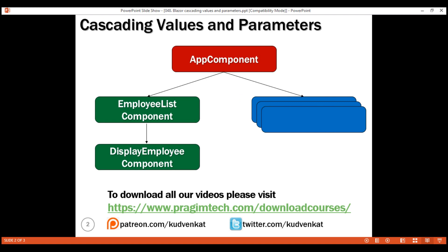However, when there are several component layers in the component hierarchy, it's tedious to pass data from an ancestor component to a descendant component using component parameters. This is when we use cascading values and parameters — they provide a convenient way for an ancestor component to pass a value to all of its descendant components.